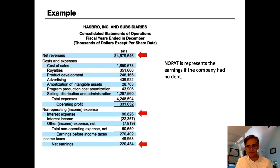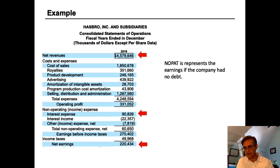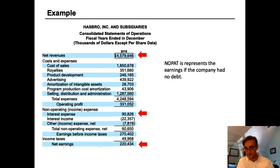This is the income statement for Hasbro, one of the largest toy companies in the world. We can see that in 2018 they had $4.5 billion of revenue and $220 million in net income. We can also see that they had $90 million in interest expense, so we know they had debt and were paying interest on it. The question is: what would they have earned if they had no debt? In other words, what is the operating profit after tax, or NOPAT?